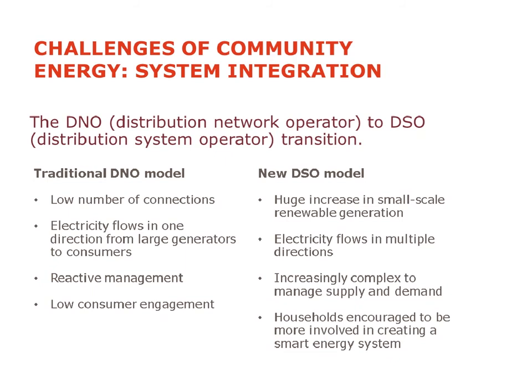A final challenge for everyone is moving the whole system from a highly centralized electricity system to a more distributed model — referred to in the UK as the DNO to DSO transition. The traditional DNO model that has worked for many decades involved a low number of connections from large power stations, electricity flowing in just one direction, reactive management, and low levels of consumer engagement — consumers just paying their bill at the end of three months. The new model means a huge increase in small-scale renewable generation, with thousands of small-scale generators all around the country.